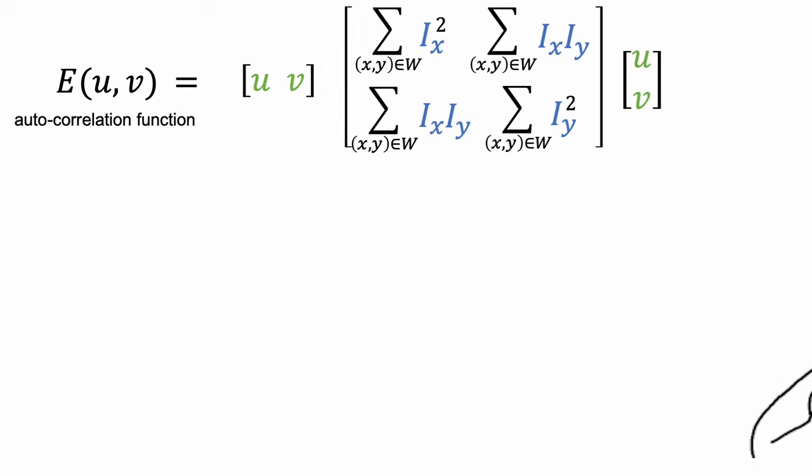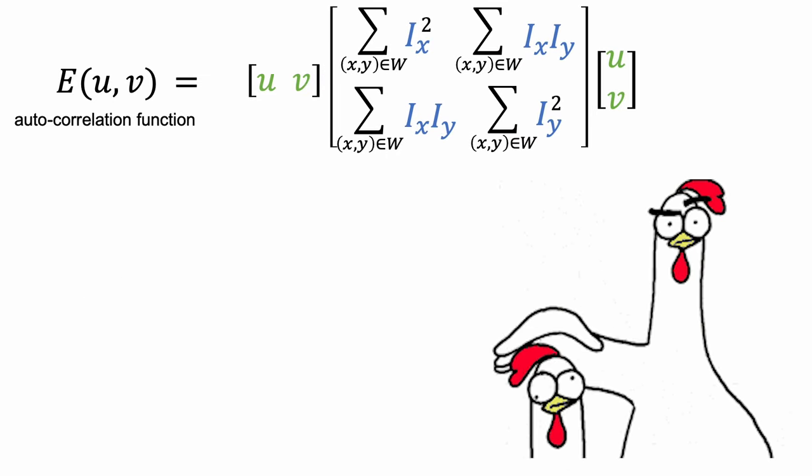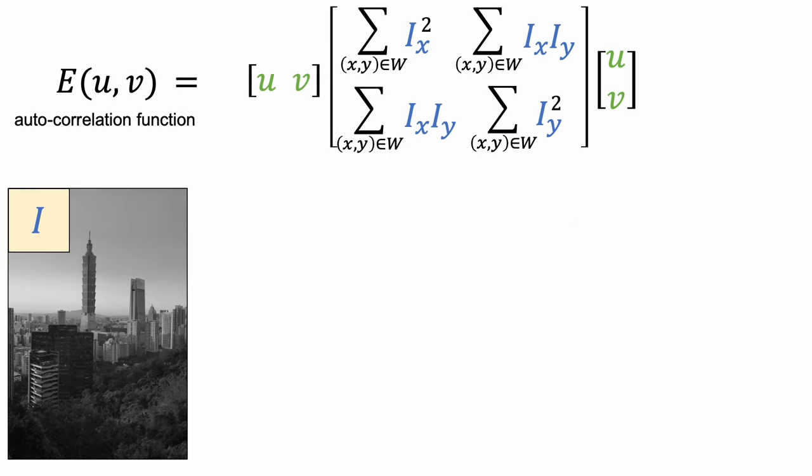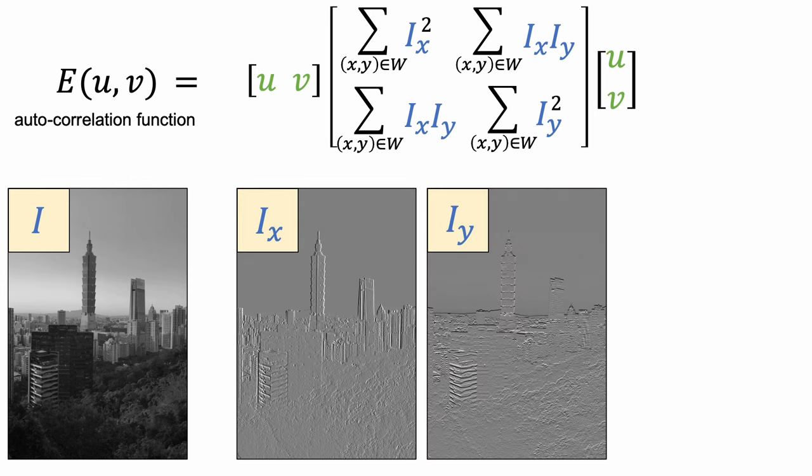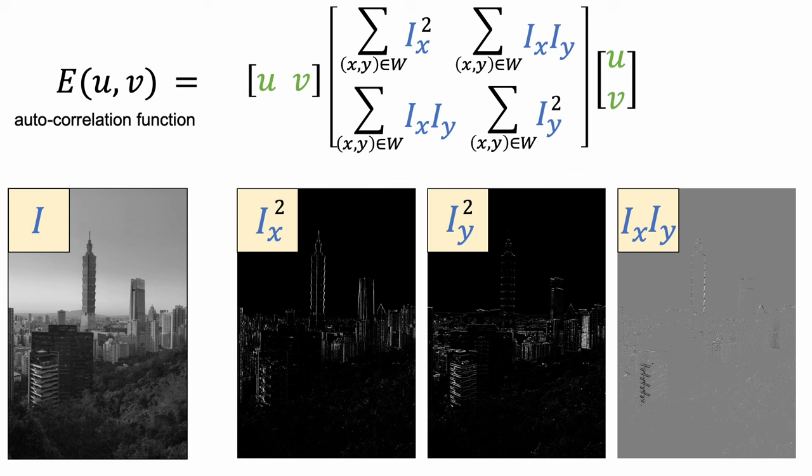We are now ready to develop a method to detect good features for tracking. Given an input image I, we compute the x-derivative and y-derivative using gradient filters, and compute the required terms for every pixel. The summation here sums the value over a local window.